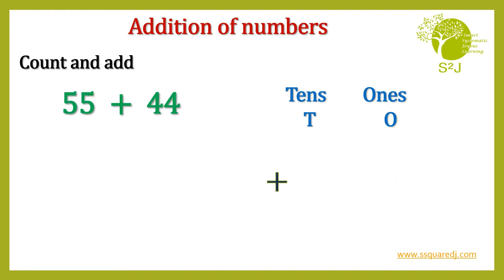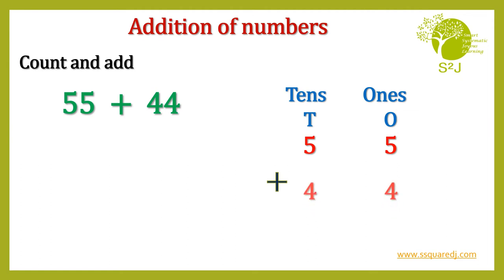55 plus 44. Let's arrange it vertically. So 5 in 1's place and 5 in 10's place. Let's arrange 44. 4 in 1's place and 4 in 10's place.